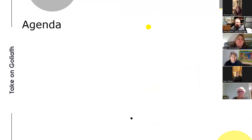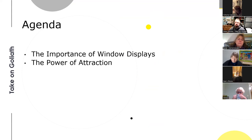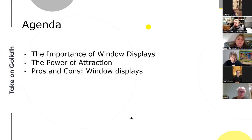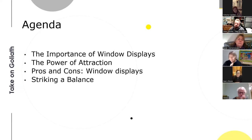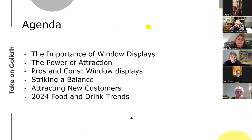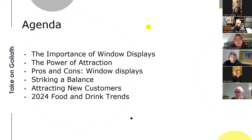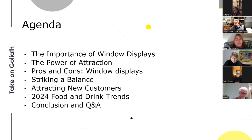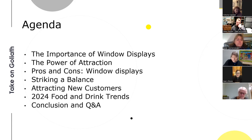The agenda: we'll look at the importance of window displays, the power of attraction, pros and cons of different window display approaches, finding a balance between what we display, some technologies around that, attracting new customers, and food and drink trends for 2024. Those trends around what mainstream consumers are interested in will help inform what to put in your shop windows. We'll conclude with questions and answers. I've taken random pictures off the internet — if your store is on there and you're not happy, let me know.